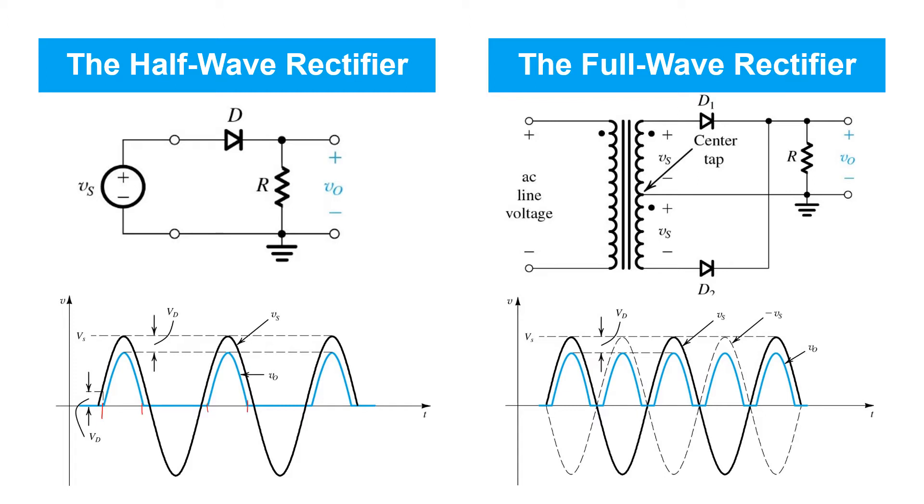If you think about it in terms of the average DC output level at VO, it's not very high because the negative half-cycles of the input VS are kind of being wasted.